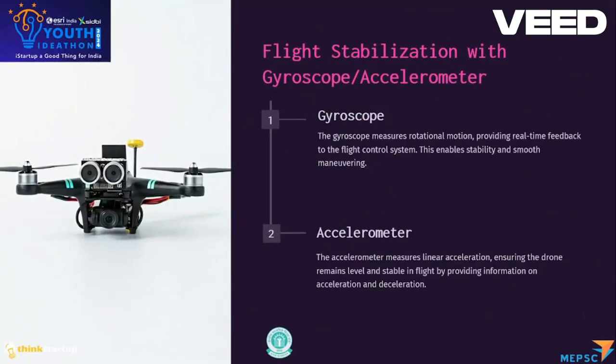Flight stabilization with gyroscope and accelerometer. The gyroscope measures rotational motion, providing real-time feedback to the flight control system, enabling stability and smooth maneuvering. The accelerometer measures linear acceleration, ensuring the drone remains stable in flight by providing information on acceleration and deceleration.